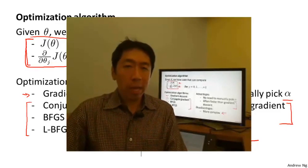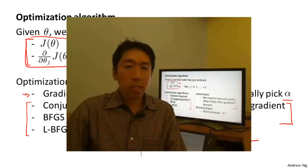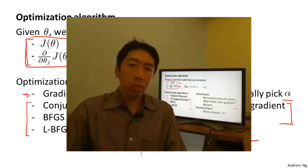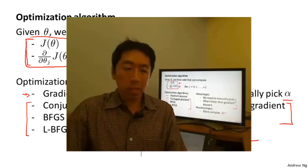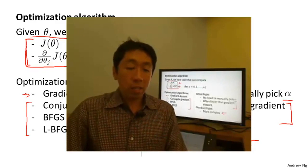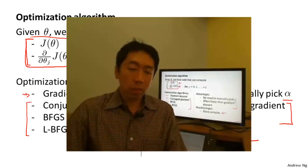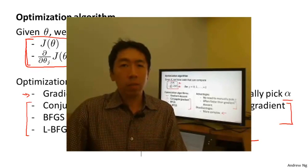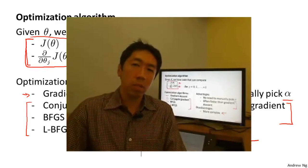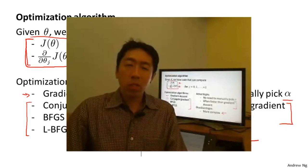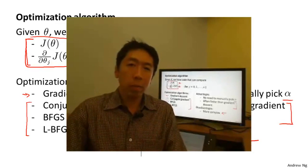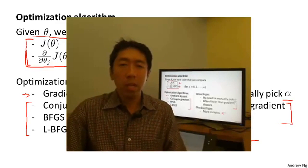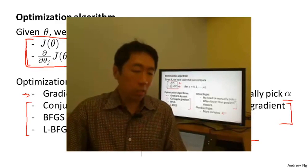Octave and the closely related language MATLAB have a pretty reasonable library implementing some of these advanced optimization algorithms. If you just use the built-in library, you get pretty good results. I should say that there is a difference between good and bad implementations of these algorithms. So if you're using a different language for your machine learning application — like C, C++, or Java — you might want to try out a couple of different libraries to make sure you find a good one, because there is a performance difference between a good and a less good implementation of conjugate gradient or L-BFGS.